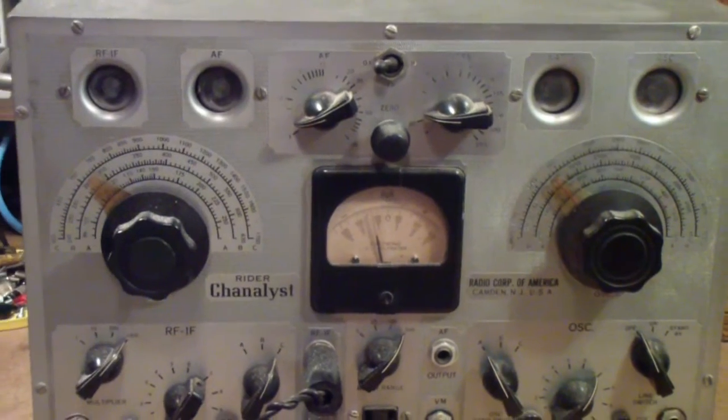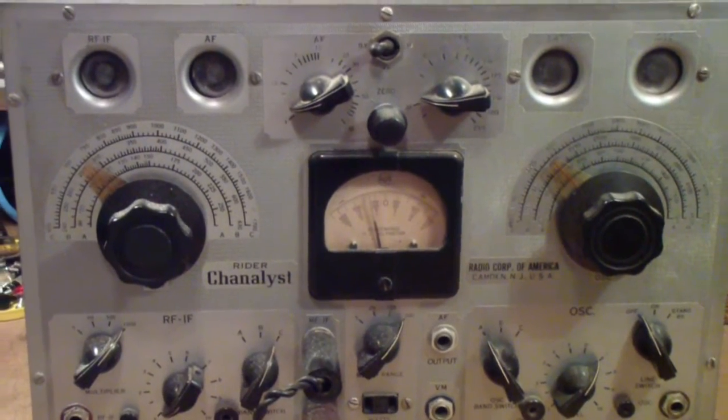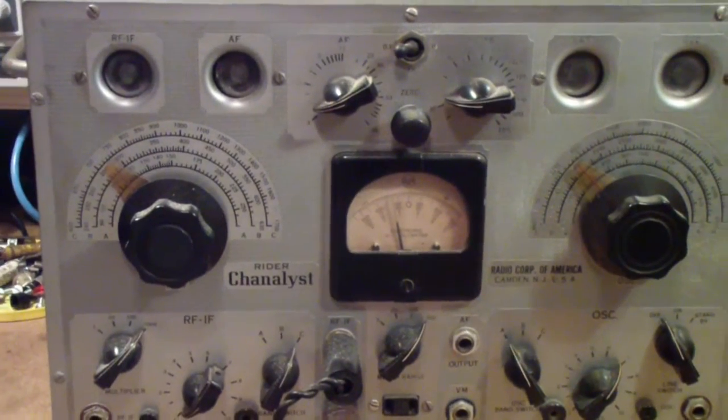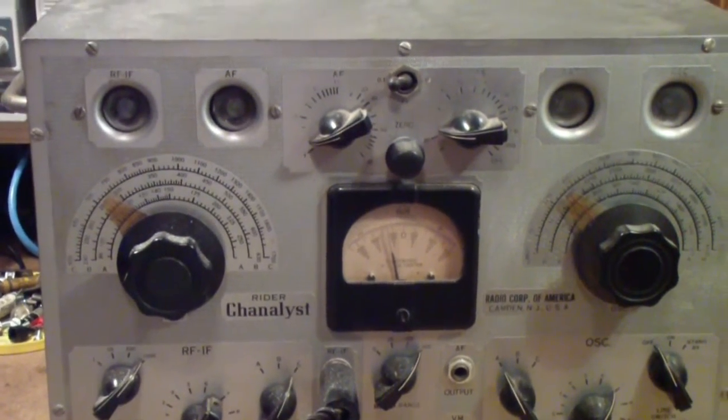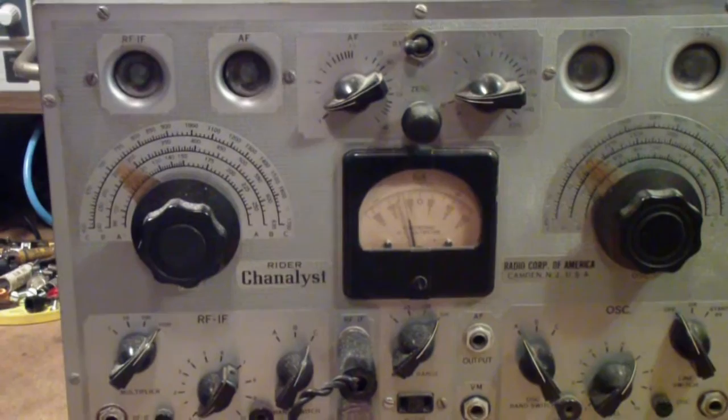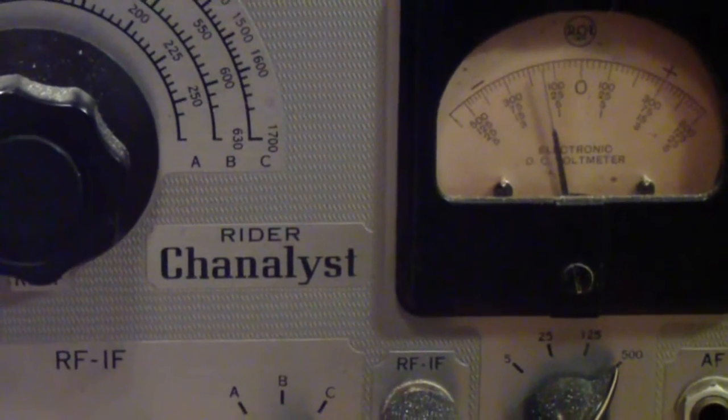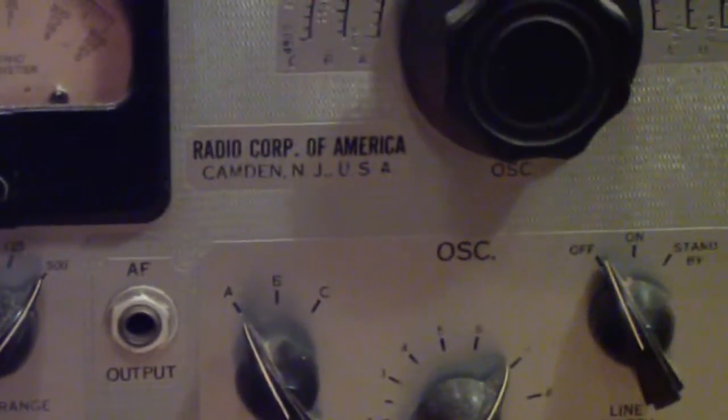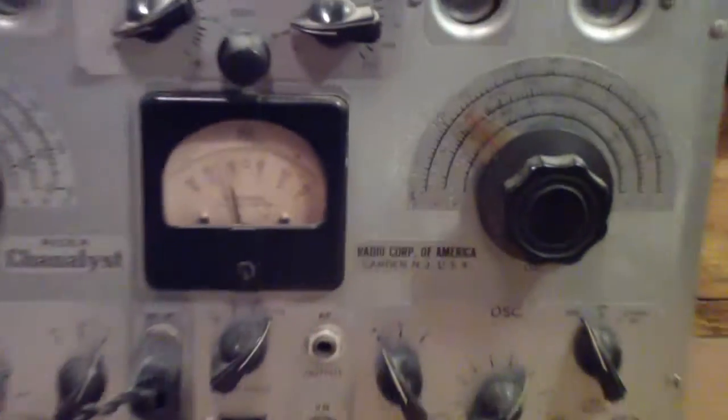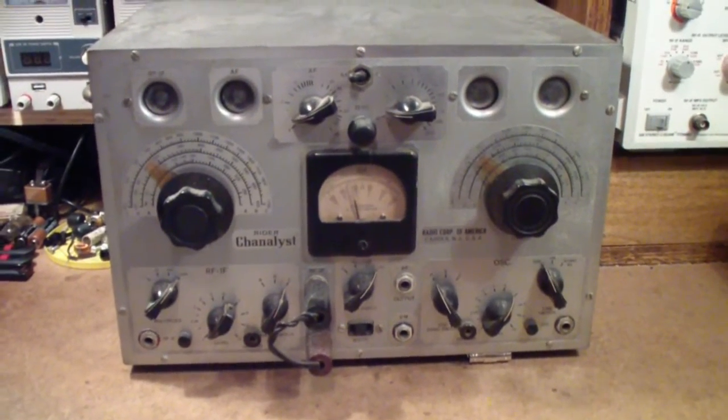Later the rights to build these were acquired by RCA. What this is intended to do is test radios of the 1930s and 1940s. It came out in the late 30s. But you notice that they still call it a Ryder Channelist, even though it's made by the Radio Corporation of America, because Ryder was a rather famous name in the 30s and 40s and even into the 50s in radio and later into television.